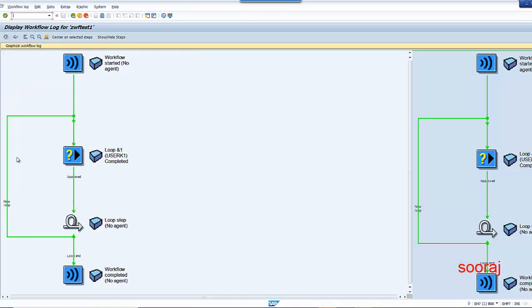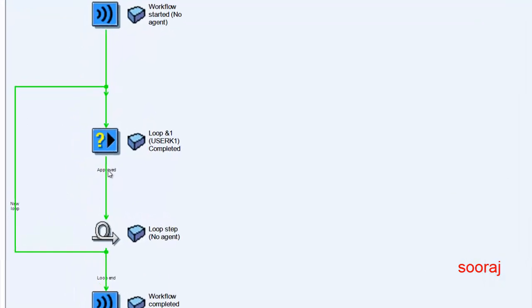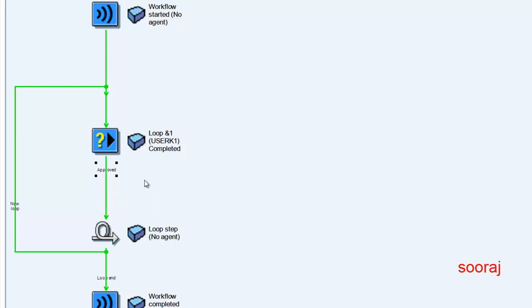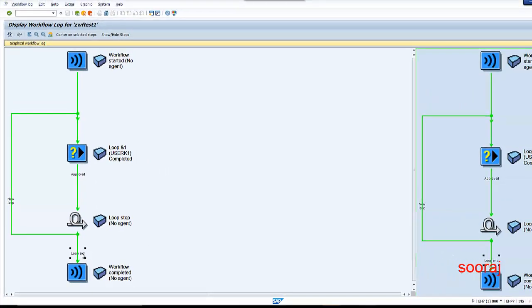You can see the path the workflow has taken: first the workflow starts, then user decision loop 1 is approved. I'm approving from the screen. Then it gets incremented by the counter operation step we created — incremented by one. The counter element is incremented by one, then it goes for a new loop and gets repeated until the condition is satisfied. Once the condition is satisfied, the loop ends.